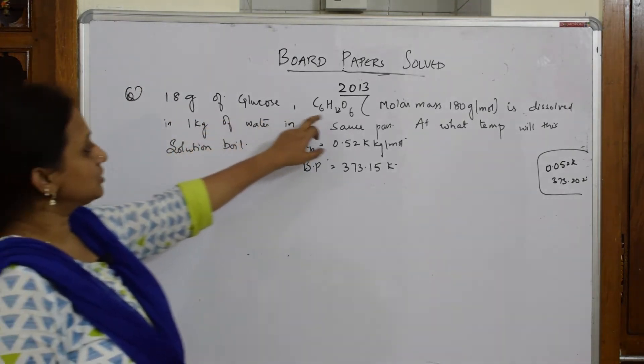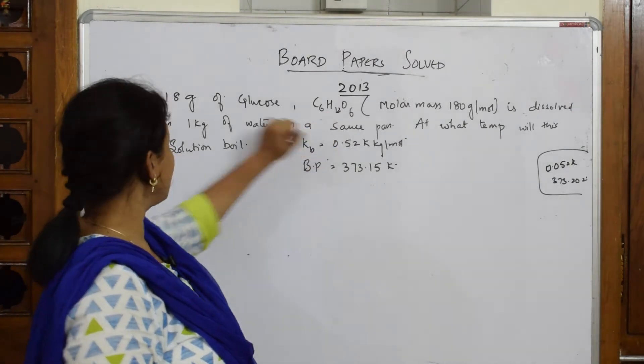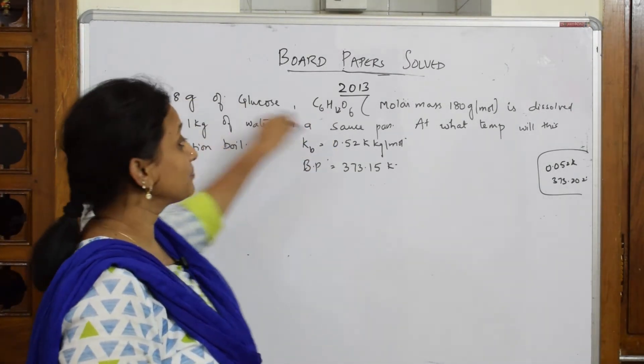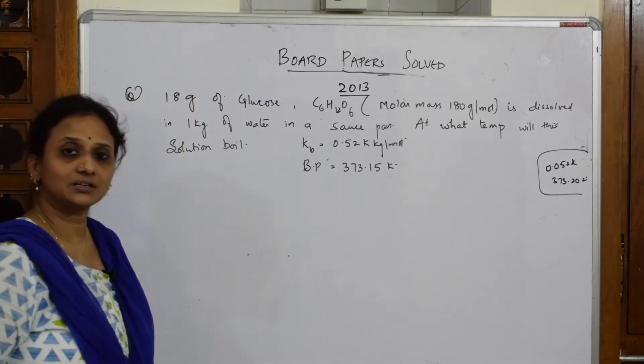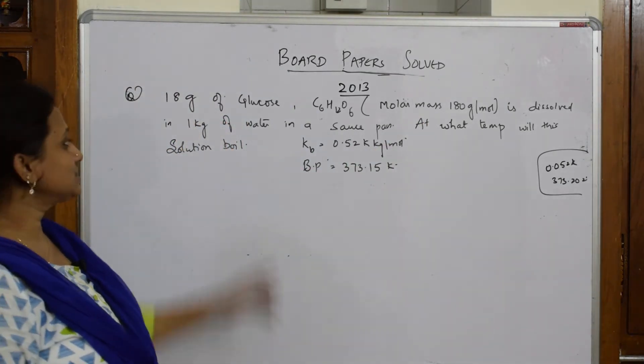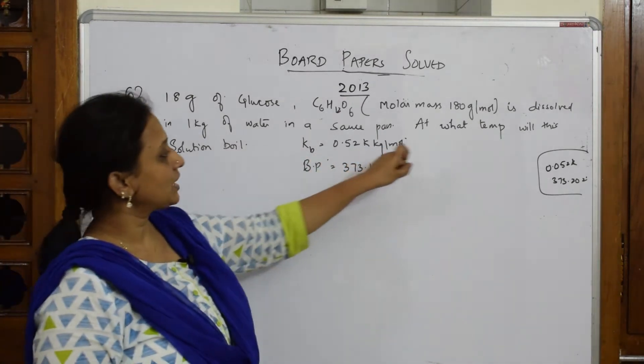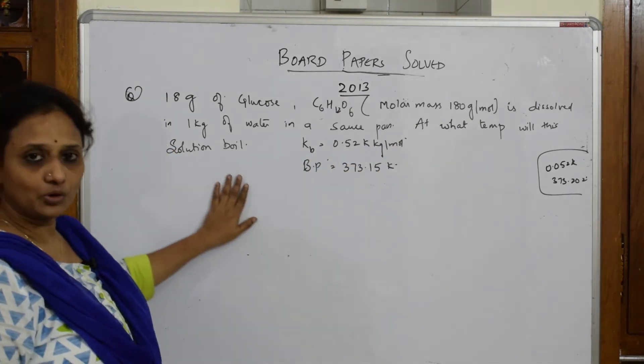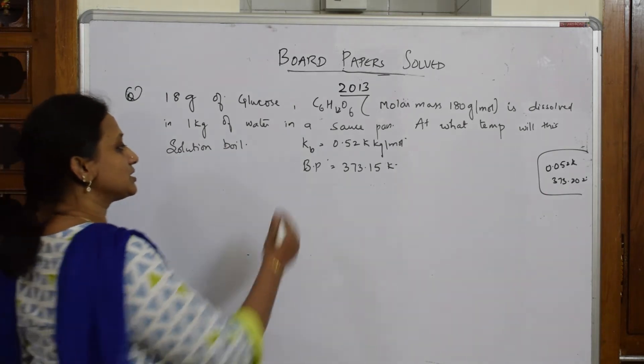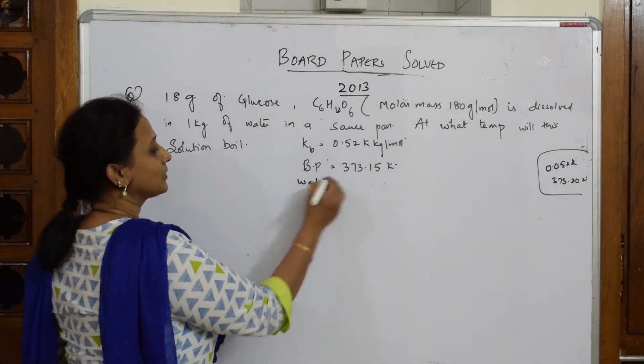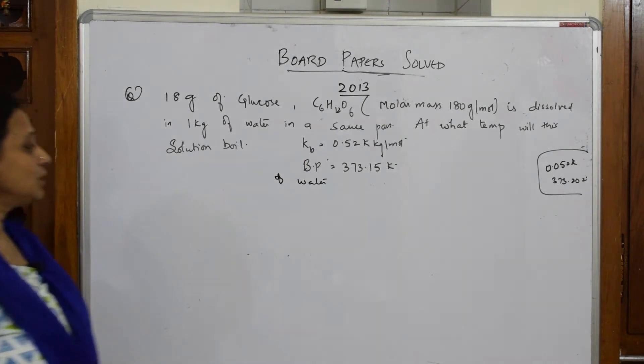Let's start. 18 grams of glucose - the formula is given, weight is given, W2 is given, M2 is given - is dissolved in 1 kg water. W1 also is given, that is thousand grams in a saucepan. At what temperature will the solution boil? Kb is given, boiling point of water also is given.